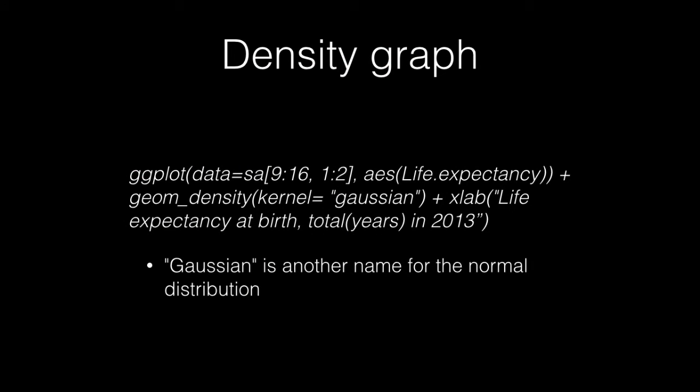Now that we have the basics of the ggplot function, let's practice by creating a new type of graph called the density graph. Let's look at life expectancy at birth in 2013 in the developing South Asian region, referencing specific rows and columns. We're going to use the geom_density function, which has a Gaussian specifier. Gaussian is just another name for the normal distribution, which is what most density graphs are based on. Lastly, let's title the x-axis.